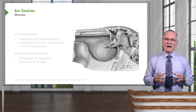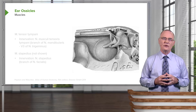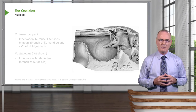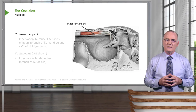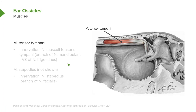The ear ossicles have muscles associated with them that attach to them. One such muscle is the tensor tympani, seen here shaded, and it attaches to the malleus. It is innervated by the mandibular nerve, which is V3 — one of the divisions of cranial nerve number 5, the trigeminal nerve.